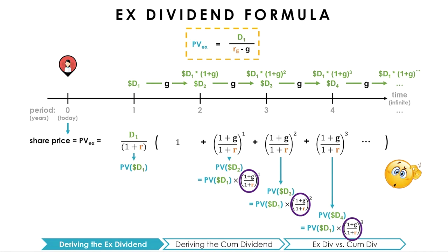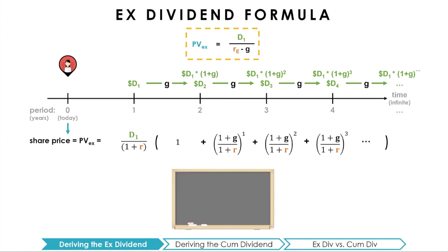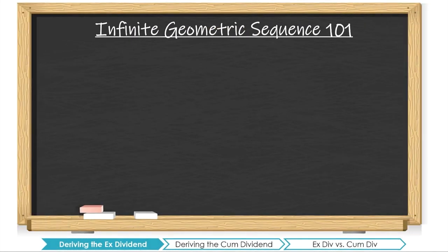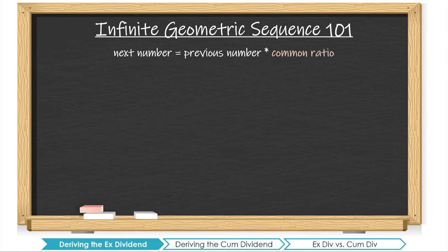So how can we find the sum of these dividends that keep growing forever? Thinking back to high school, this pattern — an infinite geometric sequence — may look familiar. As a quick recap, a geometric sequence is a progression of numbers where the next number is found by multiplying the previous number by a fixed rate, known as the common ratio. For example, we can build a series by starting with 1 and multiplying every term by one-half.